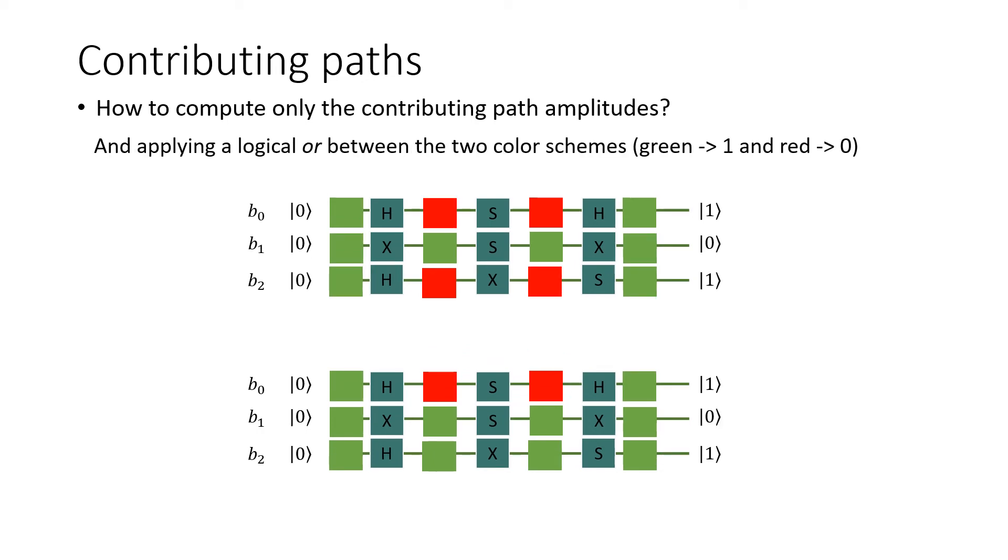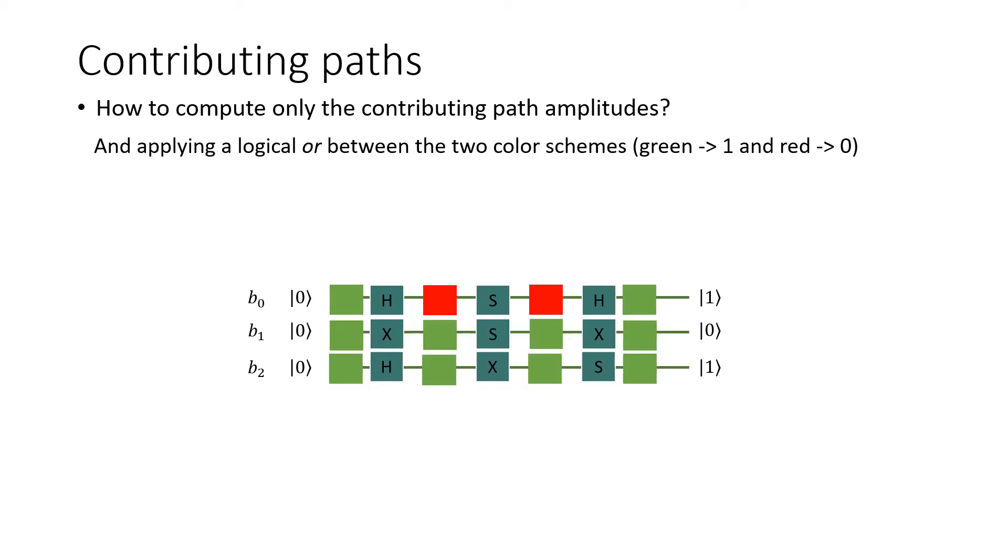Then, we apply the logical OR between the two color schemes, in which the green can be thought of as 1 and red as 0. At this point, we identified some green bits with fixed values. The amplitudes of all gates that have both inputs and outputs green can be computed once and for all, multiplied together. They will be a multiplying factor for the overall amplitude calculation.